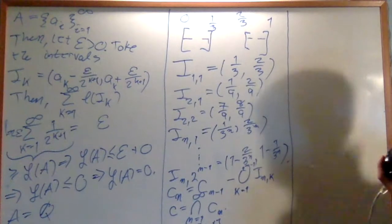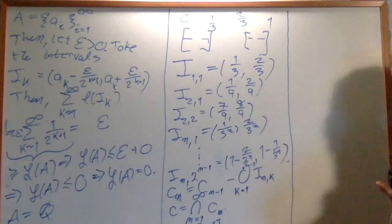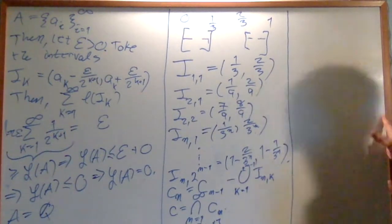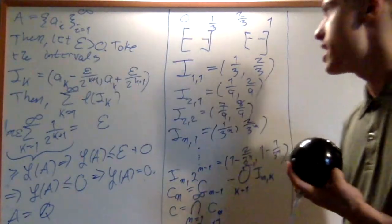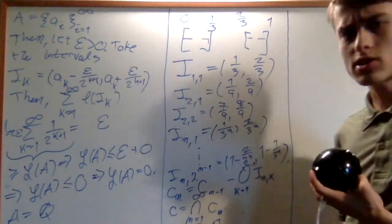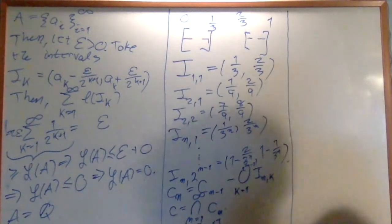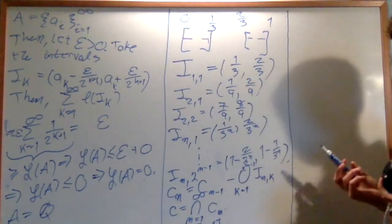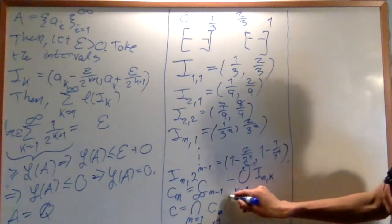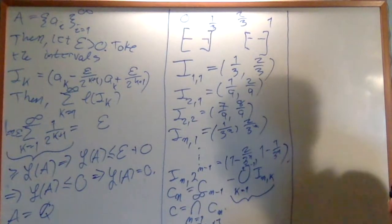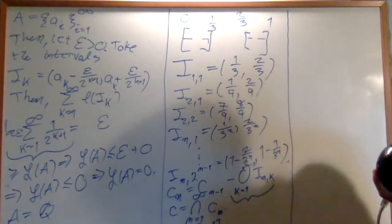Now why does the Cantor set have measure 0? It's actually uncountable, so we can't use the previous argument — I won't prove uncountability here, just know that it is. Instead, we prove that all the sets we are removing have total measure 1.